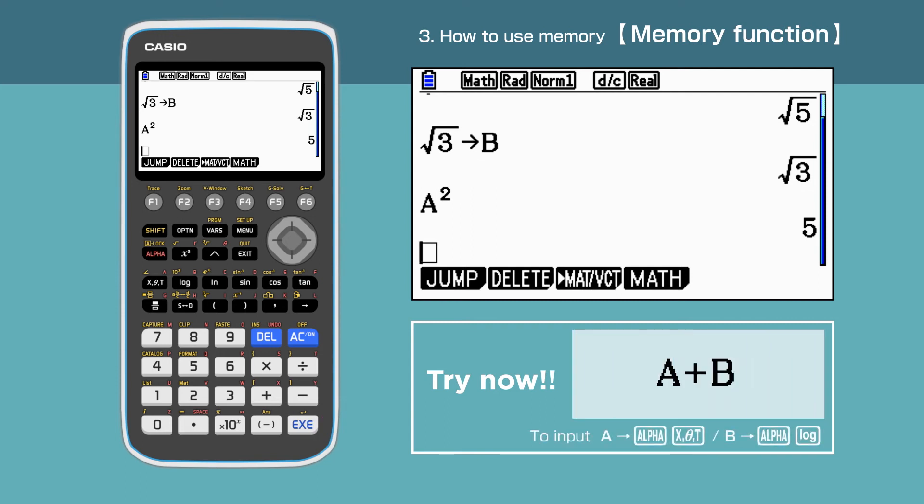Next, we are adding A and B. We get root 5 plus root 3 for the answer.